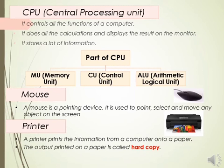The third part is the ALU — Arithmetic and Logical Unit. This unit performs all arithmetic calculations like addition, subtraction, multiplication, and division. It also performs logical operations like finding the greater number, smaller number, greater than or equal to, less than or equal to, and not equal to. For example, is 5 greater than 4, equal to 4, or not equal to 4.